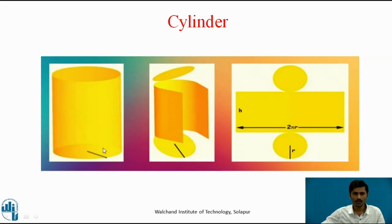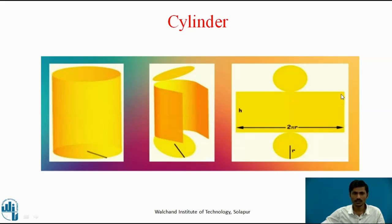Similarly, for a cylinder, one generator is cut and we have two circles. If we unroll the curved surface of the cylinder on the development plane, we get a rectangular surface whose length equals π × d, that is the circumference of the circle, and the height of the rectangle equals the axis height or the cylinder height. This plane is called the development of the full cylinder.